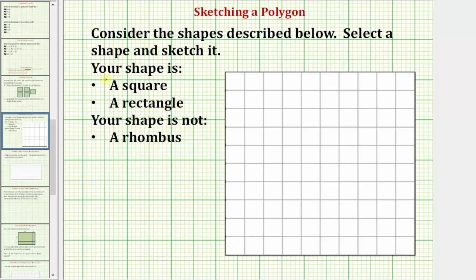If we select the shape as a square, we want to sketch a square on the grid. A square is a four-sided polygon where all four sides have the same length, and all the interior angles are right angles, or measure 90 degrees.